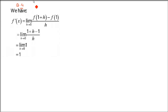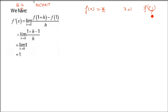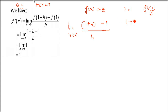Question 4, also NCERT: f(x) = x at x = 1, find f'(1). Using first principle: f(x+h) - f(x) = (x+h) - x = h, divided by h, limit h→0. The h in numerator and denominator cancel, leaving 1. Since it is a constant, the limit is 1. So f'(1) = 1.